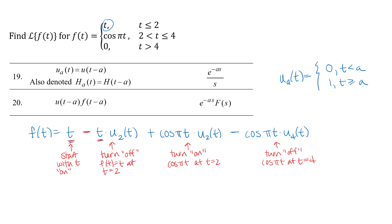I've now written my function using the unit step function, so I want to look at the table of Laplace transforms. Line 19 is just for a unit step function by itself — I don't have any terms like that. All of my terms are functions of t times a unit step function, so that's really line 20. The important thing to notice is that the function of t times that unit step function needs to involve t minus a. The unit step function can also be written as u of t minus 2, so I need the function in front to be in terms of t minus 2 as well.